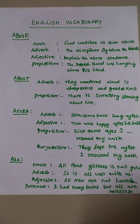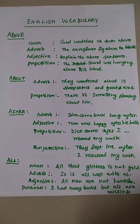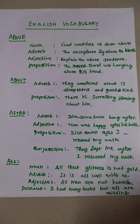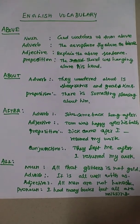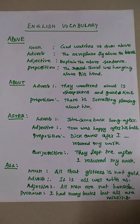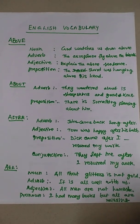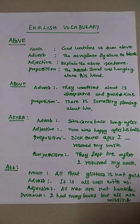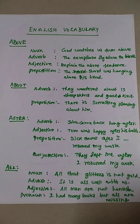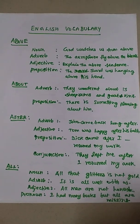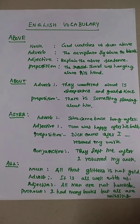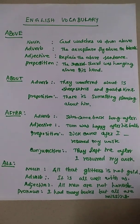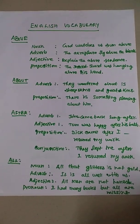Next, 'about.' About is used as an adverb: 'They wondered about his sheepskins and goatskins.' And as a preposition: 'There is something pleasing about him.' This is the preposition usage of 'about.'